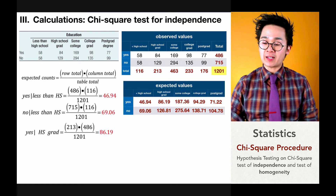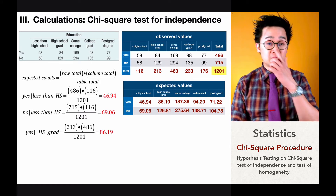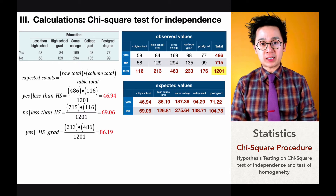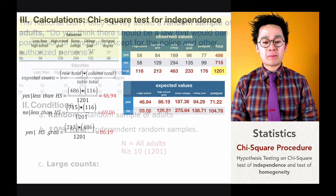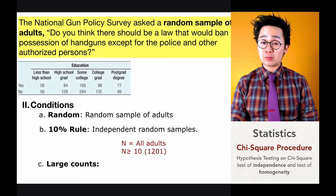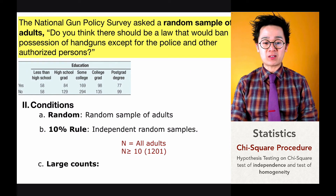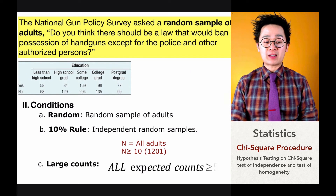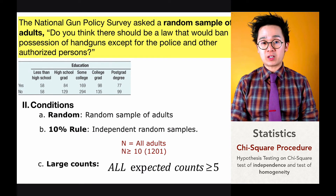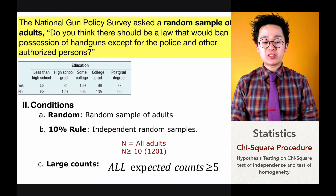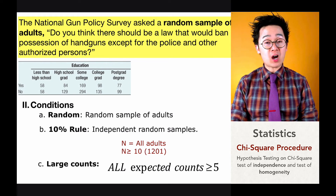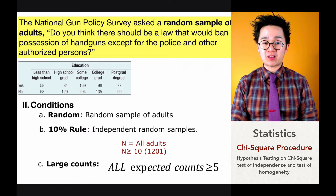Going back to our conditions: all expected values in the table are greater than or equal to five, so the large counts condition is satisfied. All three conditions are met, so we do not need to proceed with caution and can move forward with the calculation.